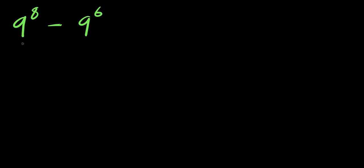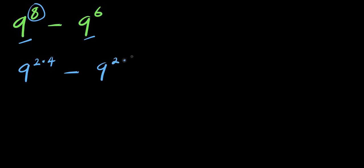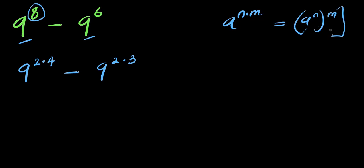Hello. How to evaluate without our calculator 9 to the power of 8 minus 9 to the power of 6. I can express 8 as the product of 2 and 4, so I have 9 power 2 times 4 minus 9 power 2 times 3. Now if you have a power n times m, this equals a raised to the power n raised to the power of m. I apply this identity right here.